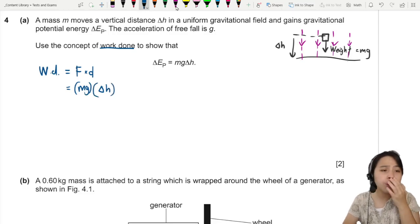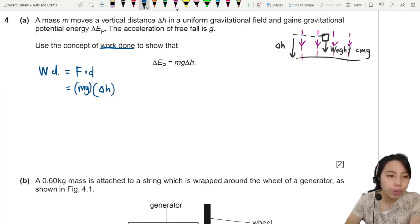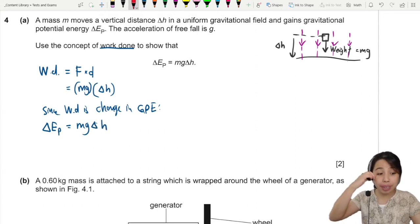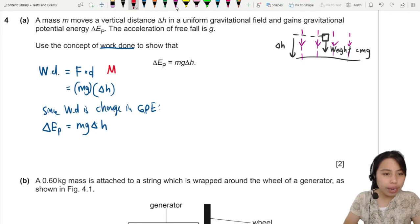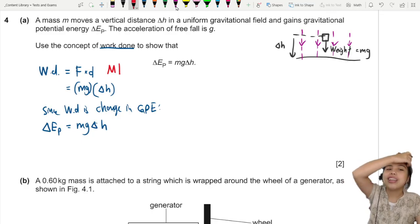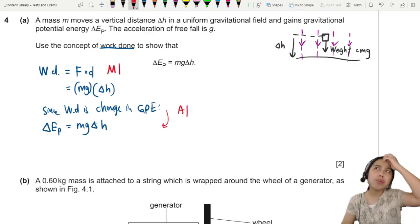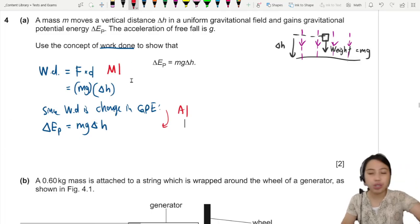Okay, so work done is a change in energy, so I'm going to do one more line and say, since work done is a change in gravitational potential energy, therefore I can say change in EP is Mg delta H. So if you write down somewhere, you know why it's work done, and then you show that work done is changing GPE. All the energy equations you can derive from work done. Make sure you know how to do that.